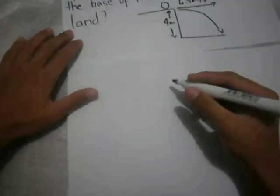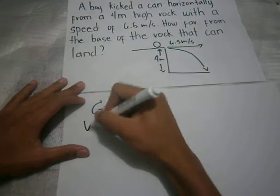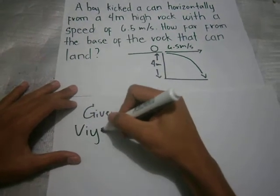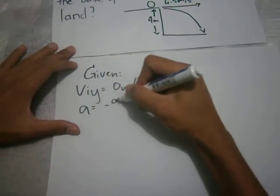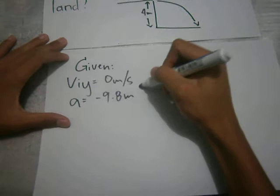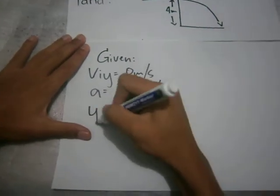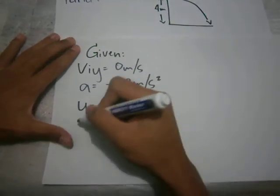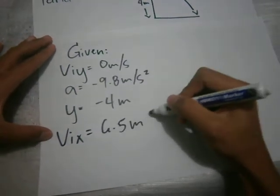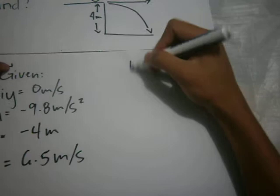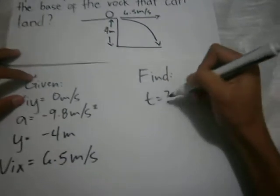Given: the initial velocity in y is equal to 0 meters per second, acceleration or the gravity is equal to negative 9.8 meters per second squared, y is equal to negative 4 meters, and initial velocity in x is equal to 6.5 meters per second. Now we will find t and x.